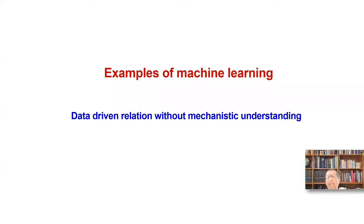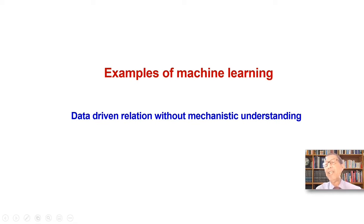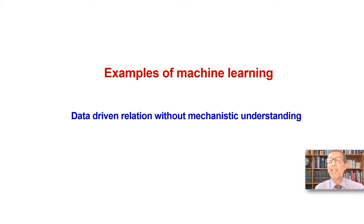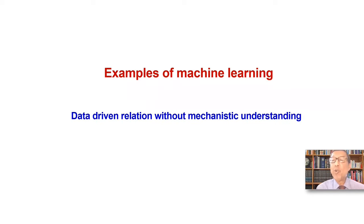Moving to machine learning: these are data-driven relations without mechanistic understanding. Nowadays, we also do hybrid approaches in which we make use of data-driven relations but empower a mechanistic model to generate some of the data — that way it is physics-informed machine learning. It is not totally devoid of basic understanding; we can assimilate basic understanding, but it is still the correlation among data that we are looking for.